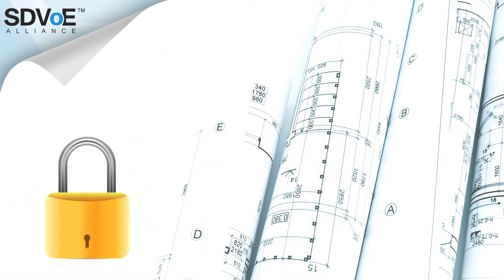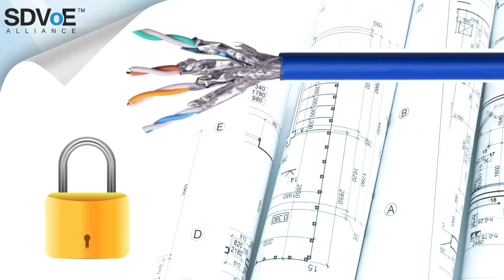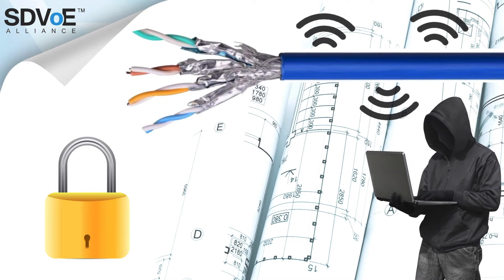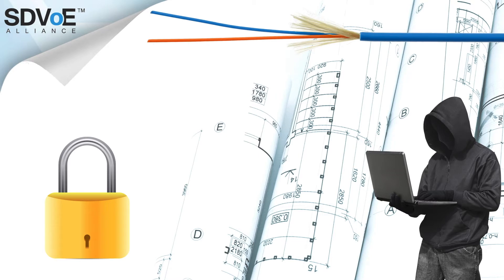Security is also a key consideration. The signals on a copper cable can be picked up and analyzed without the cable being compromised. And yet fiber optics simply do not allow this to happen. This is why high-security projects tend to demand a fiber infrastructure over copper.